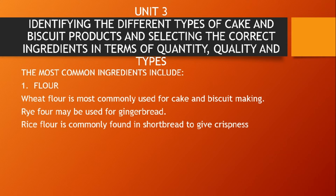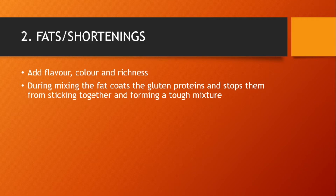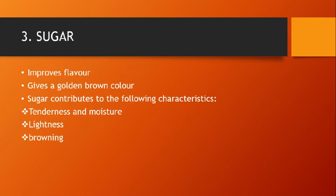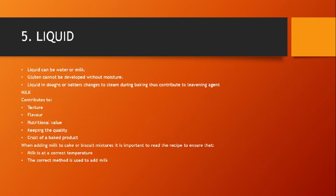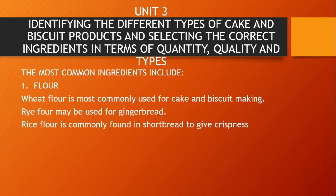Unit Three covers the different types of cakes and biscuits. The most common ingredients used when preparing cakes and biscuits are: flour, fats or shortening, sugar, eggs, and liquid (which can be milk or water). Regarding flour: wheat flour is most commonly used for cake and biscuit making; rye flour may be used for gingerbread; and rice flour is commonly found in shortbread to give crispness.